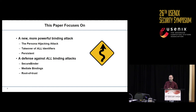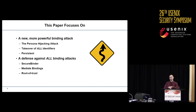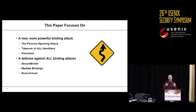This paper focuses on two things. First, we develop a new, more powerful binding attack — the persona hijacking attack — that persistently takes over all of the identifiers of some victim device and will last for hours or days. Second, we develop a defense based on completely preventing all identifier binding attacks, which we call SecureBinder, that operates by mediating and validating these bindings and providing a root of trust for network identifiers.